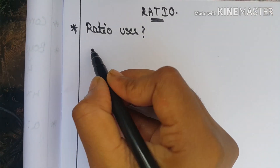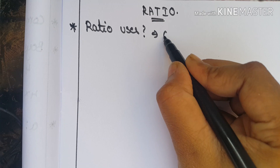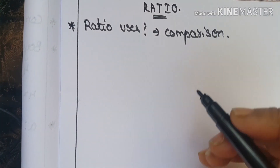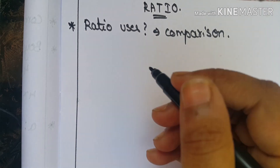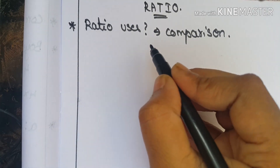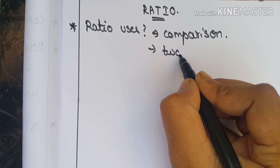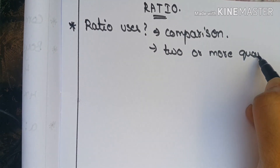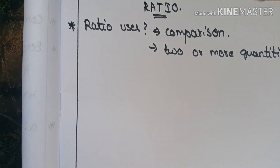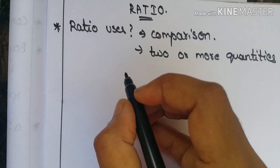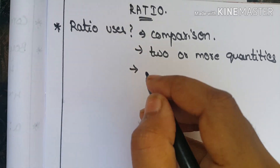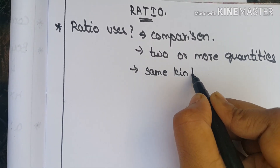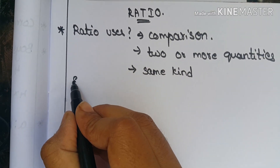Ratios are used in comparison — comparing two or more quantities. The main point is that the ratios must be of the same kind in comparison.